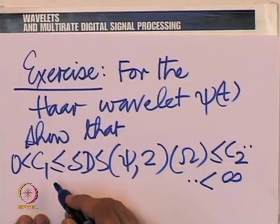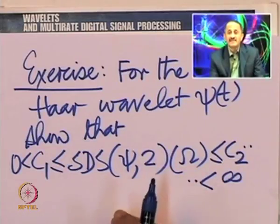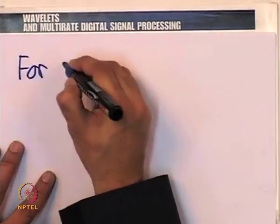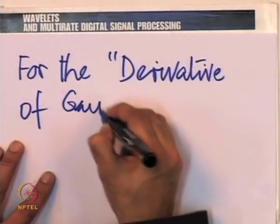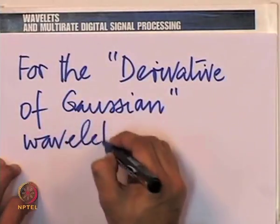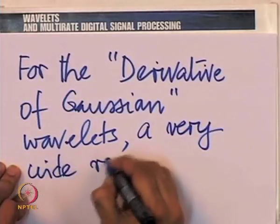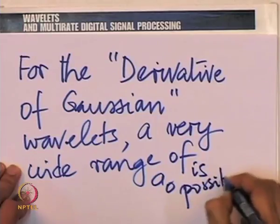The lower bound is a little more tricky and I leave that as an exercise for the class. This also holds for the Gaussian wavelet — for the derivative of Gaussian wavelets, one can show that a very wide range of a-naught is possible. I encourage you as an exercise to find out what that range of a-naught is.